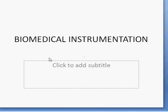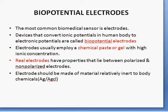Hello, I am going to take a small topic from biomedical instrumentation which is biopotential electrodes. The most common biomedical sensor is electrodes. Devices that convert ionic potentials in the human body to electronic potentials are called biopotential electrodes. Electrodes usually employ chemical paste or gel to increase the ionic concentration.